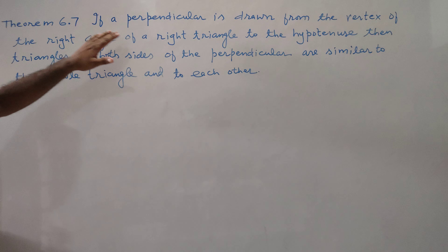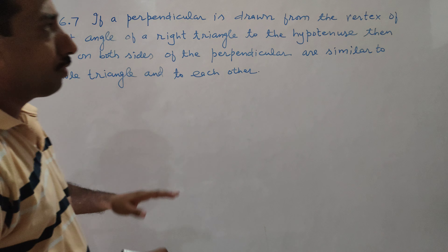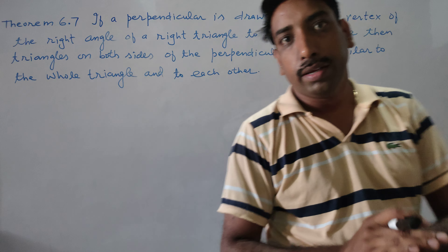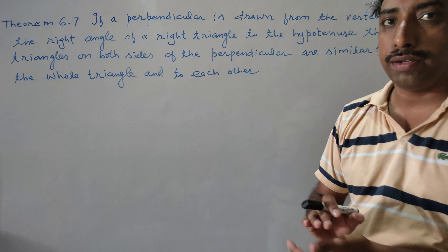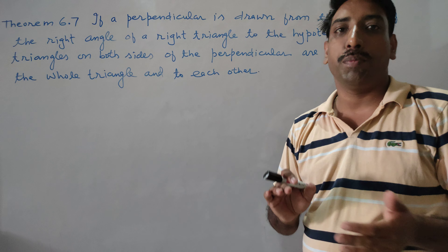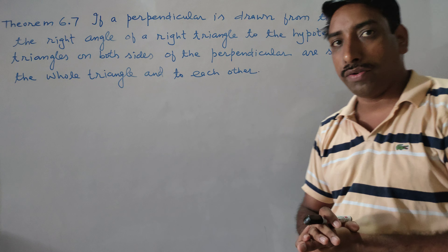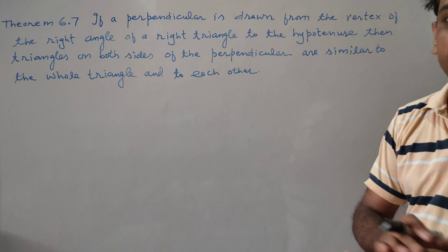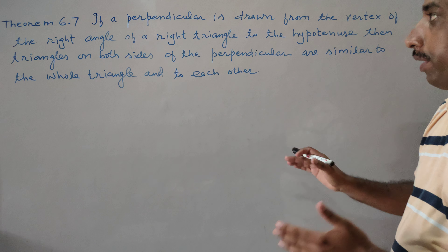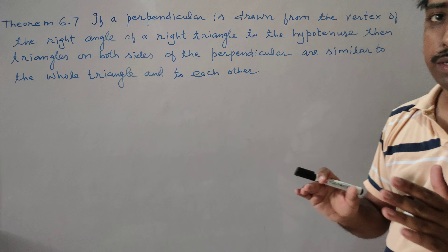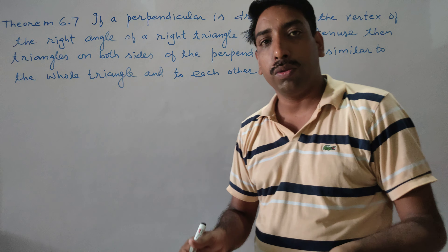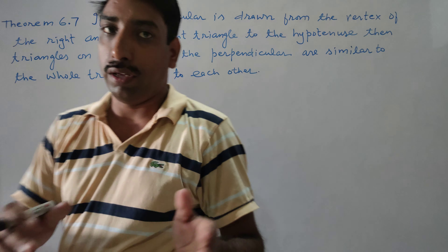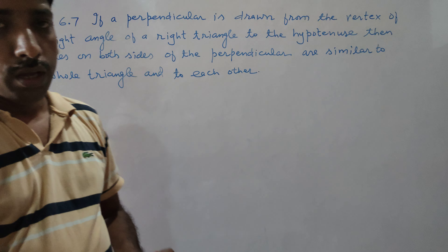If a perpendicular is drawn from the vertex of the right angle in a right triangle to the hypotenuse, the triangles formed on both sides of that perpendicular are similar to the whole triangle and to each other.